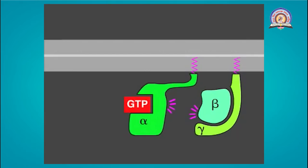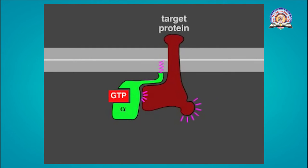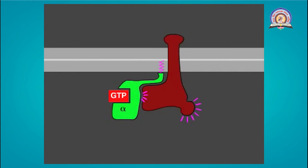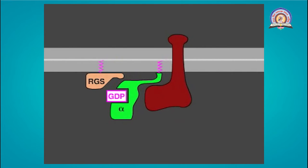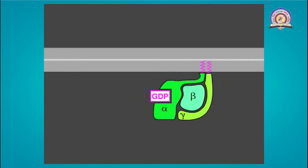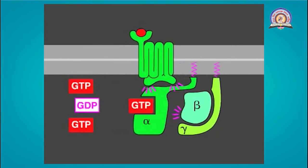In some cases, the activated alpha subunit dissociates from the activated beta-gamma complex; in others, the two components stay together. Either way, both activated components can regulate the activity of target proteins in the plasma membrane. The activated target proteins relay the signal to other components in the signaling cascade. Eventually, the alpha subunit hydrolyzes its bound GTP to GDP, inactivating the subunit. This step is often accelerated by a regulator of G-protein signaling, or RGS. The inactivated GDP-bound alpha subunit then reforms an inactive G-protein with the beta-gamma complex, turning off downstream events. As long as the signaling receptor remains stimulated, it can continue to activate G-proteins.